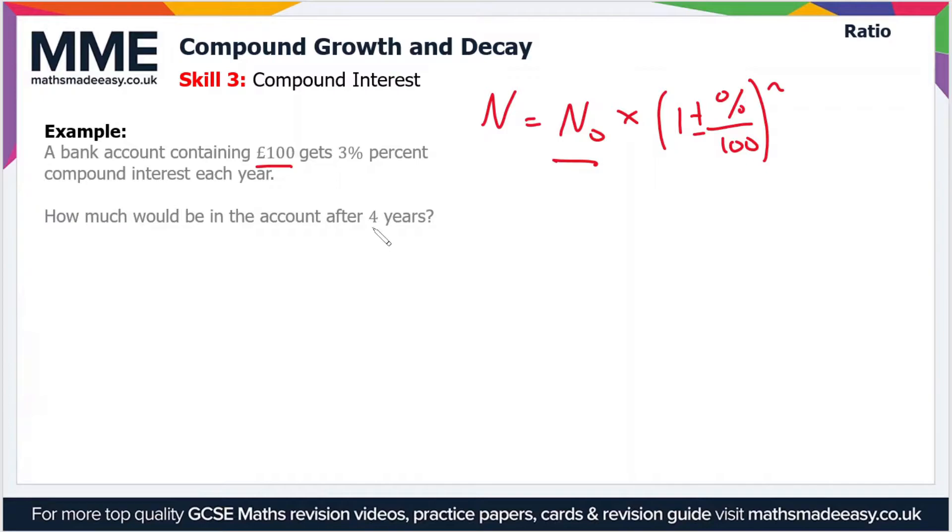So let's just rewrite the formula with our values. So N equals N₀, which is 100, times 1, and then because it is growth, it's interest, it's plus, and then the percentage is 3% divided by 100, to the power of n, which is 4 years.